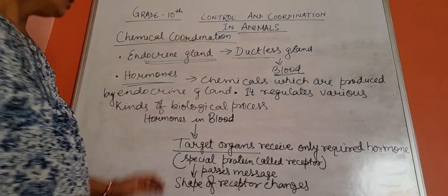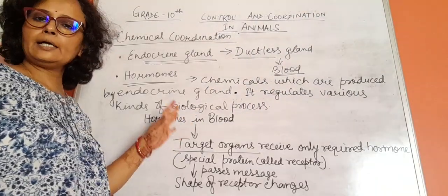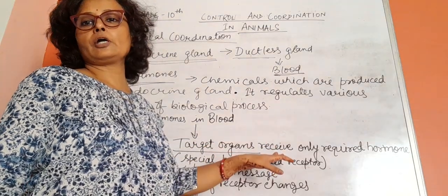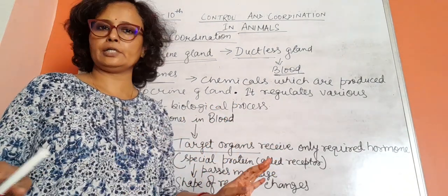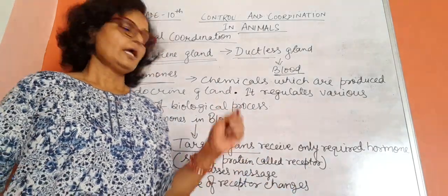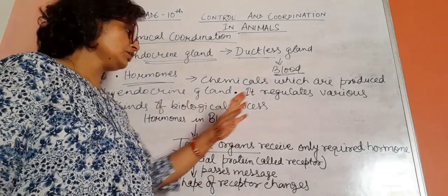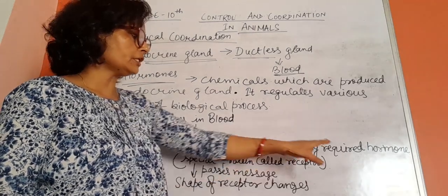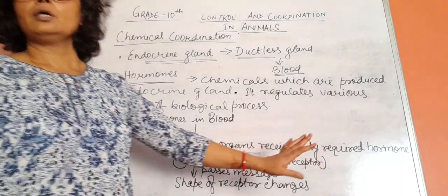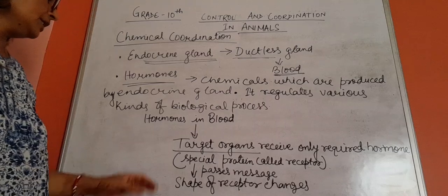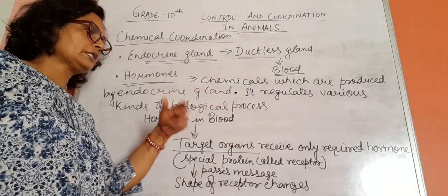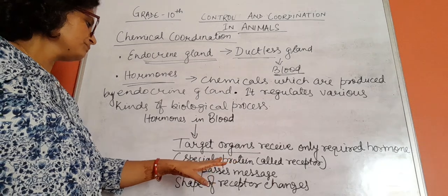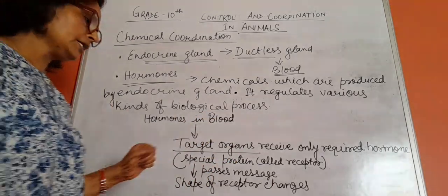Hormones released in the blood by the endocrine gland, that blood carries it to the target organs. In the target organs, they receive only the required hormone. Blood carries every hormone, goes to each and every cell and organ. There are some target organs which require a particular hormone. Those target organs receive only required hormone. On the target organ there is a special protein called receptor. Those receptors can recognize a particular hormone and receive it.